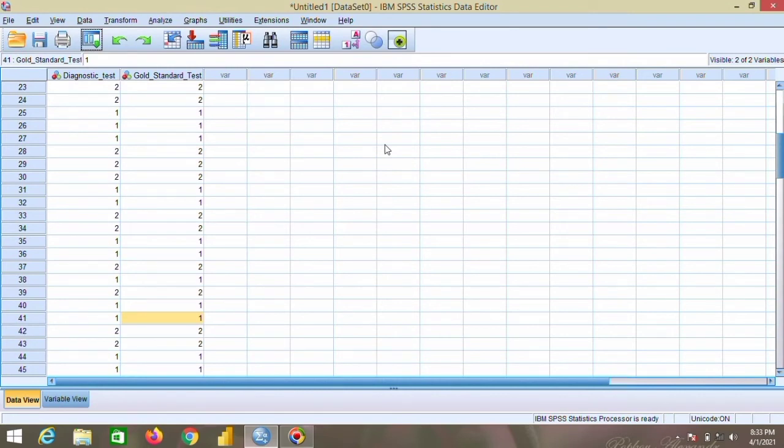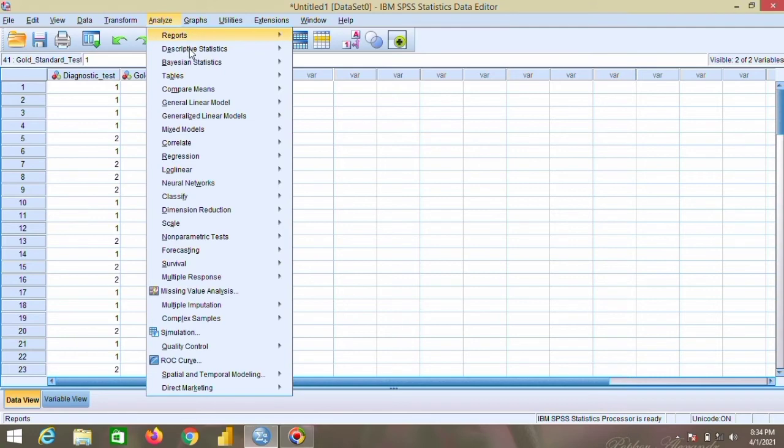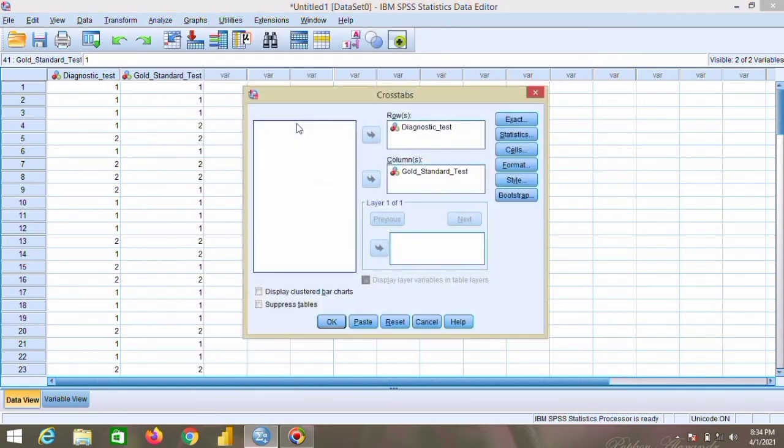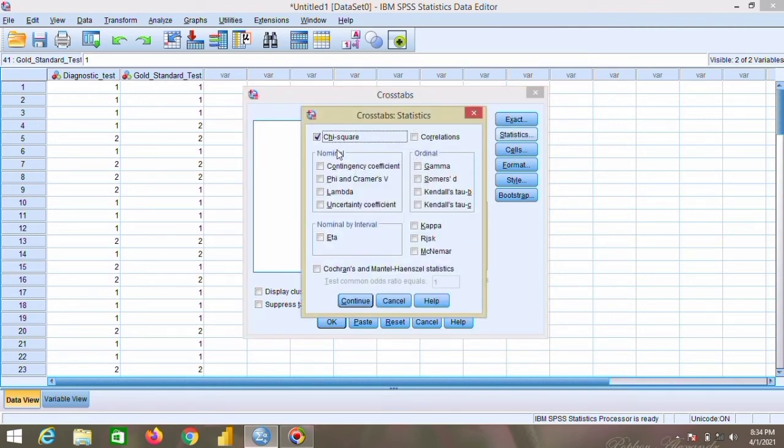So let's see in SPSS how this is done. Here we have taken 100 samples. The diagnostic test will be the heating procedure and the gold standard test will be the blood samples. We will have 100 samples here and we are going to do the sensitivity test. Here on Analyze, Descriptive, we have Crosstabs. On Crosstabs, you have to give on rows the diagnostic test and the gold standard should be given on columns. On Statistics you can give chi-square if you want to know the chi-square, but it is not necessary.